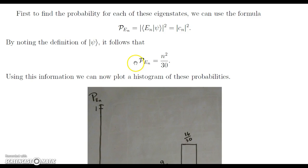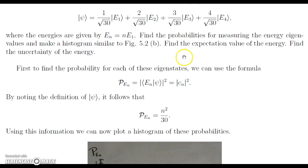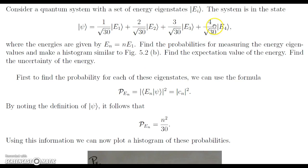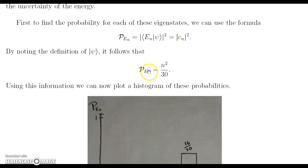So first, to find the probability of each of these eigenstates, we can use this given formula in the book. Which is that the probability of measuring the nth energy eigenstate is equal to the inner product of the E sub n state with the psi state, modulus squared. Which is just equal to the modulus squared of the coefficient here. And with a quick noting of the definition, it follows immediately that the probability is equal to n squared over 30.